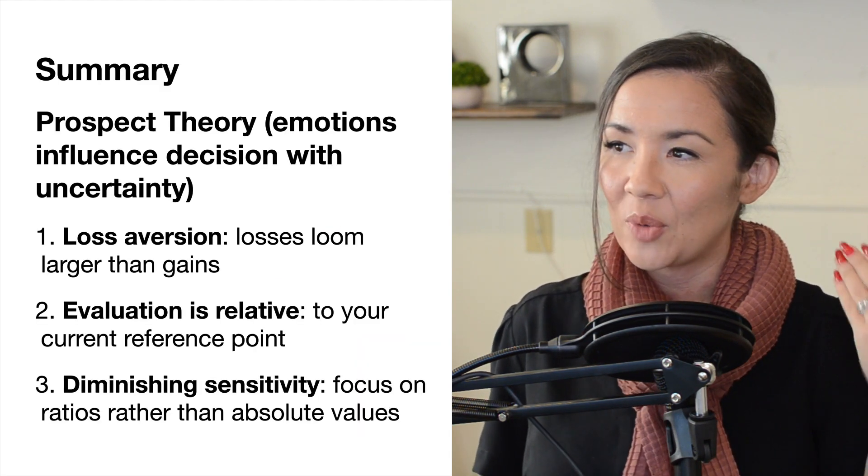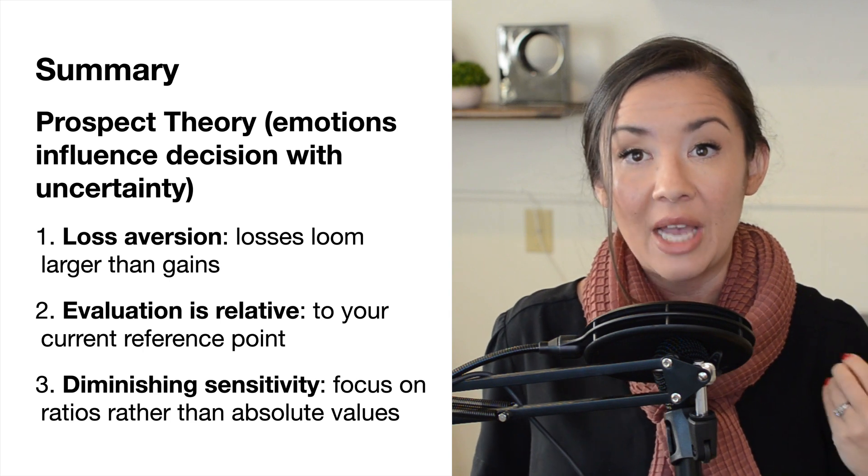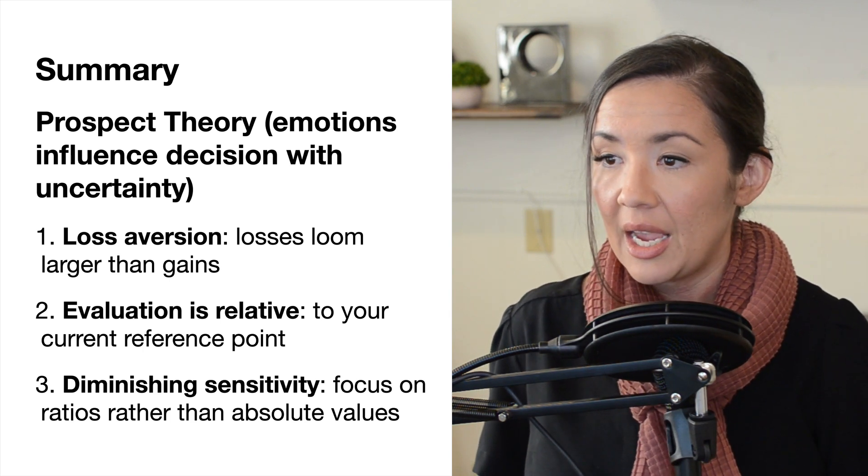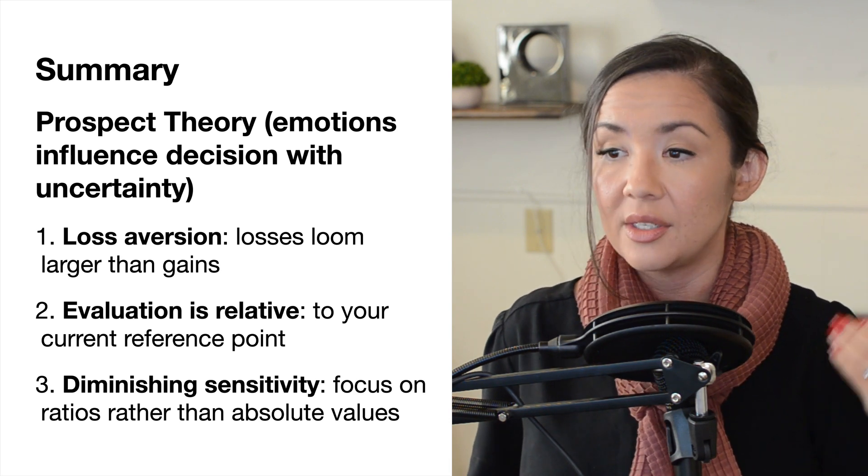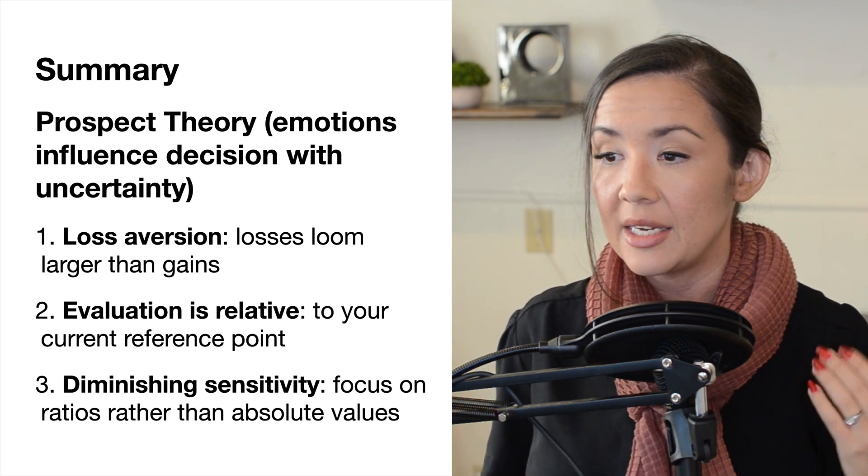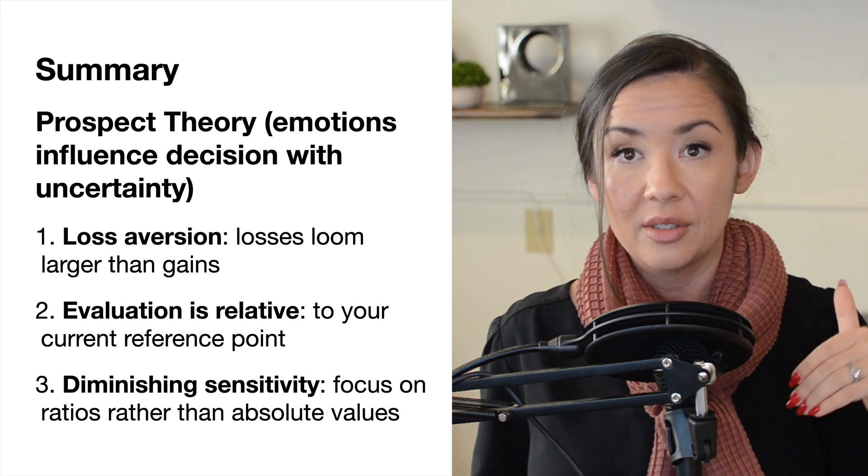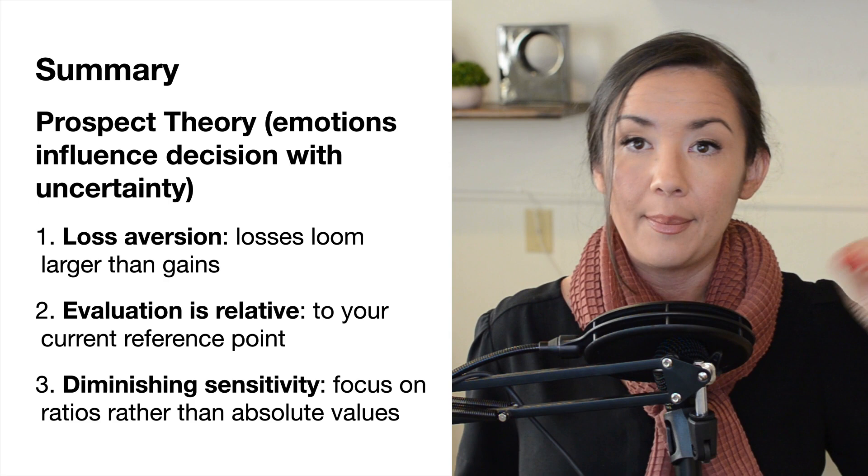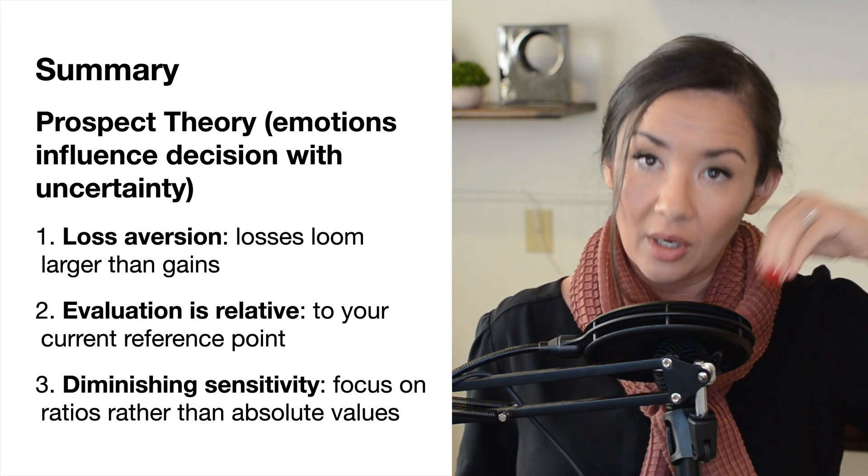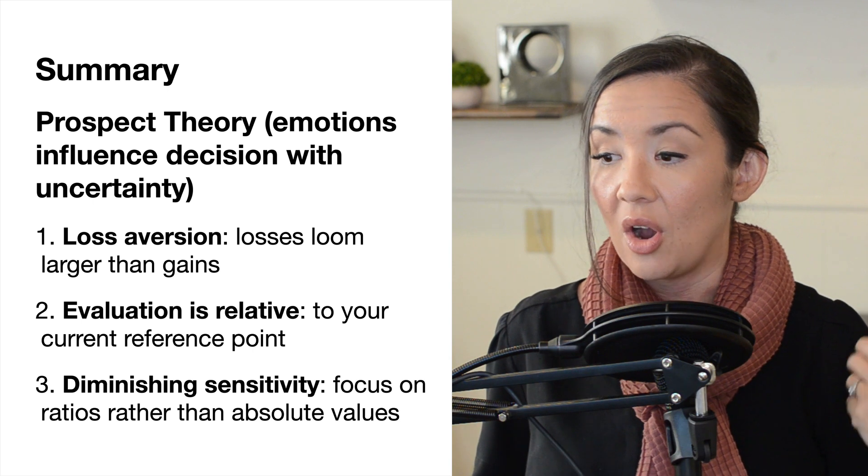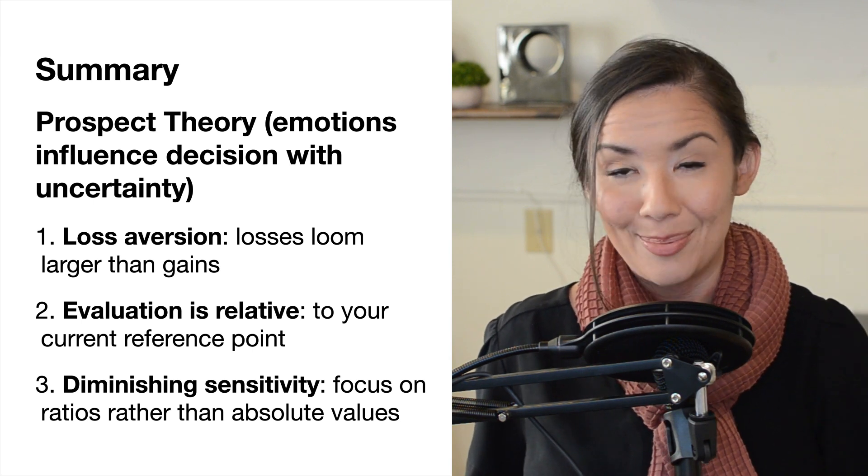Summary here - prospect theory really describes how emotions influence our judgments with uncertainty. Today we talked about loss aversion, which is how losses loom larger than gains, and how our evaluations are relative to our current point of reference - we're comparing back to former to our current. And then there's diminishing sensitivity, which is the focus on ratios rather than absolute values.